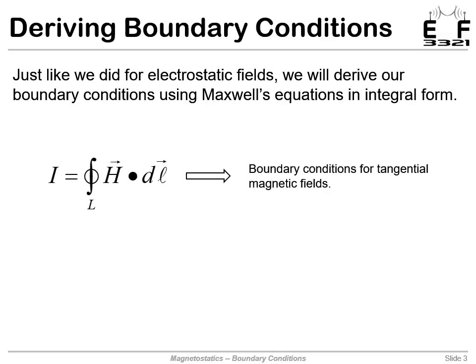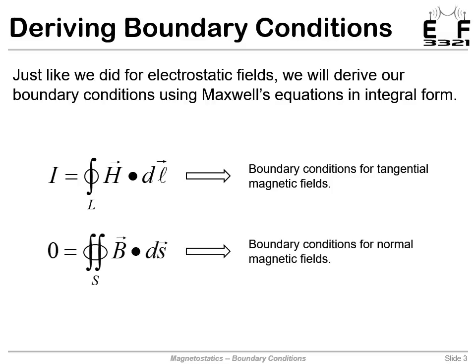It will turn out that from Ampere's circuit law we'll derive the boundary conditions for the tangential components of the magnetic fields, and then we will use Gauss's law for magnetic fields to derive the boundary conditions for the normal components of the magnetic fields.